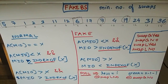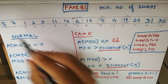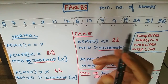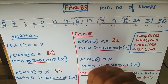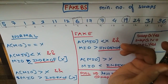Hi there. This problem is titled Fake Binary Search, taken from Code Chef's May 2018 Long Challenge. It's called Fake Binary Search because we are given an array of unsorted elements and we have to make binary search work by performing some minimum number of swaps.